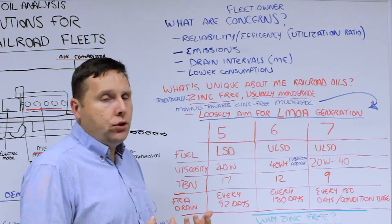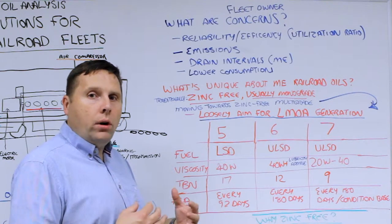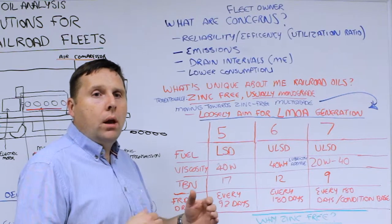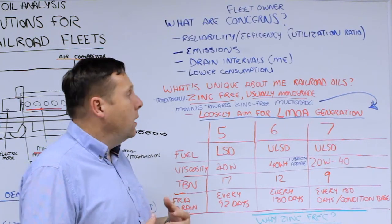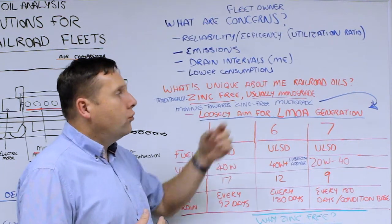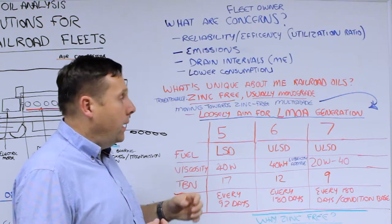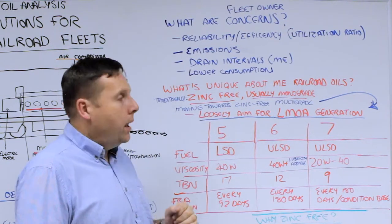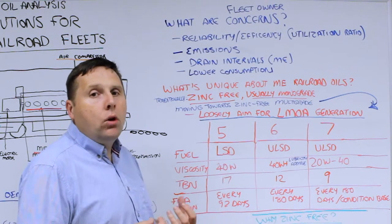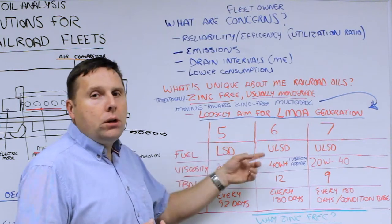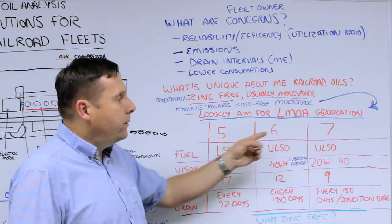As a result, engine designs have changed dramatically. Railroad oils are quite unique as a separate class, even though they're engine oils. They have unique attributes not shared with general industrial or on-highway fleet applications. Traditionally they are zinc-free—no ZDDP additive present—and have been mono-grade single weight oil, typically 40 weight. However, nowadays they're starting to move towards zinc-free multi-grade design. The main industry body influencing lubricant development is the LMOA, Locomotive Maintenance Officers Association.